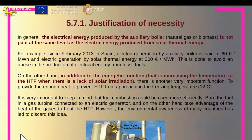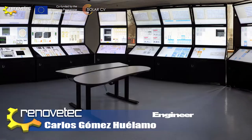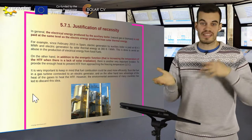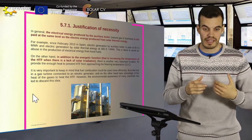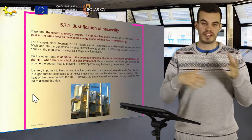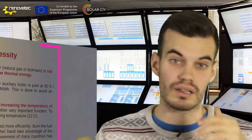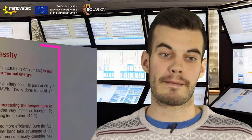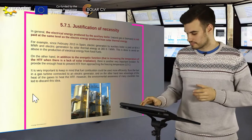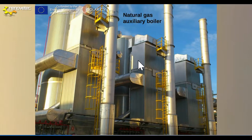On the other hand, in addition to this energetic function — that is, to increase the HTF temperature to let the plant operate under nominal conditions — you have the anti-freeze function, which is to provide enough heat to avoid the HTF reaching its freezing temperature. The HTF freezing temperature is more or less 12 degrees. If the temperature is equal to or below, or even close to this temperature, the pumps may break. Here you can see an example of three natural auxiliary boilers in vertical position.